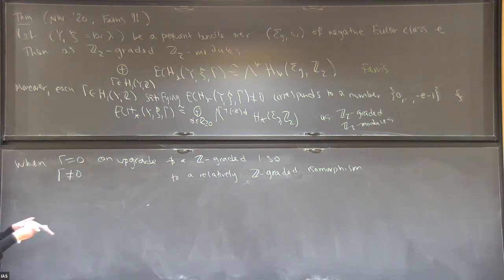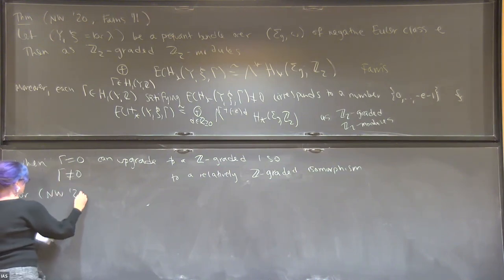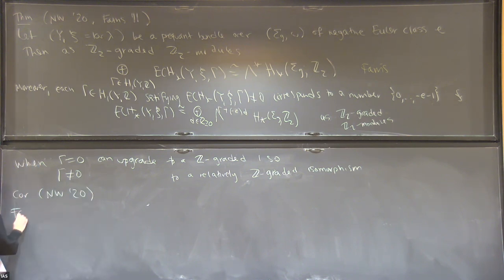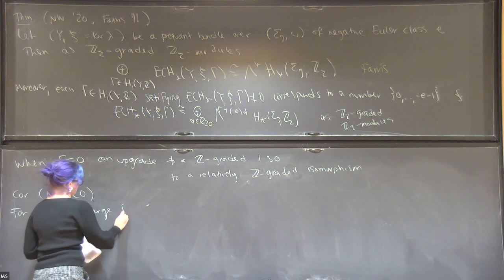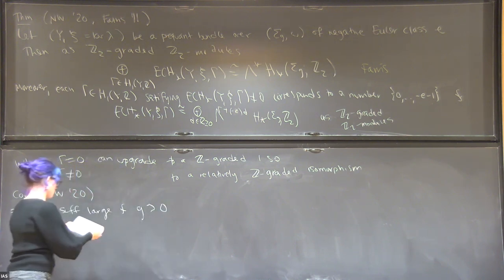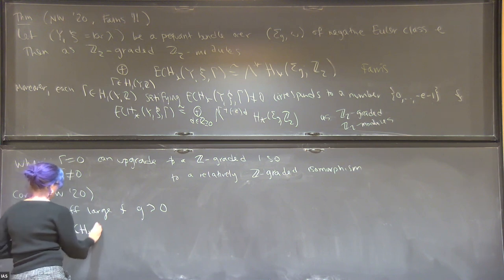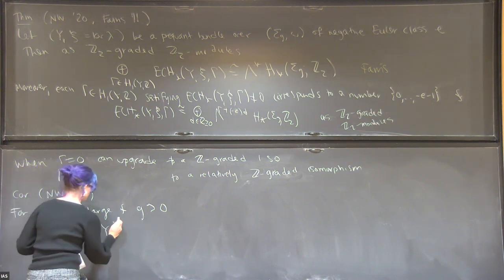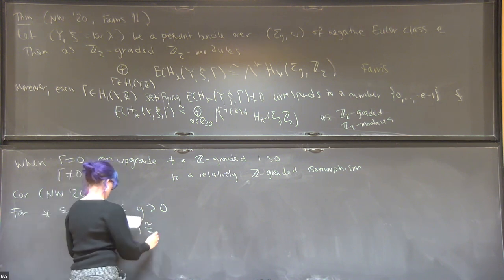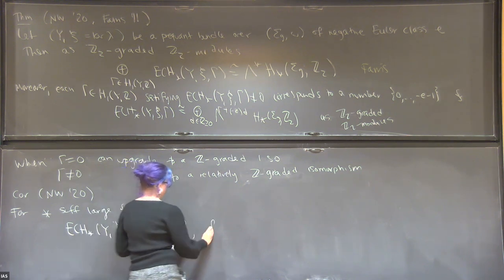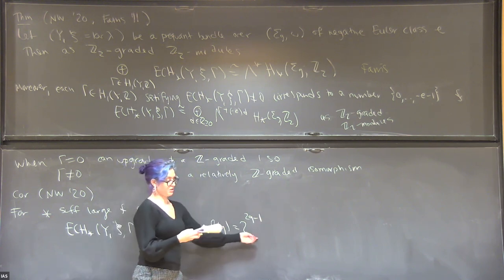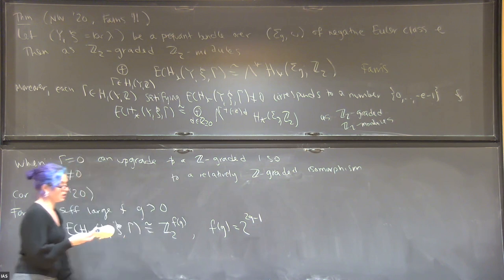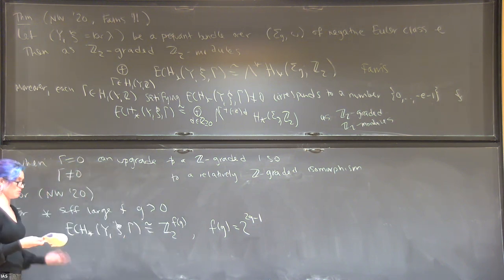Morgan and I were really able to spend a lot of time thinking about the ECH index. As a corollary, we have this computation of the stable and unstable parts of ECH. For sufficiently large grading, when the genus of the base is greater than zero, we have that the ECH of the pre-quantization bundle is isomorphic to Z2 to the F of G, where F of G equals 2 to the 2G minus 1. This comes from the binomial coefficient theorem, which tells you the number of generators corresponding to some ECH index condition.